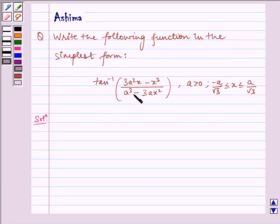We have tan inverse of 3a square x minus x cube by a cube minus 3ax square, where a is not equal to 0 and minus a by root 3 is less than equal to x is less than equal to a by root 3. Now let us find the solution.